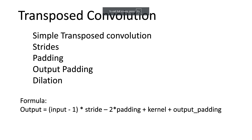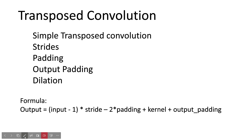In this presentation on transpose convolution — I have already made a theory video, so here I will focus mostly on the implementation. We will see simple transpose convolution, stride, padding, output padding, and dilation. One important formula to remember is: output size = (input size − 1) × stride − 2 × padding + kernel size + output padding.